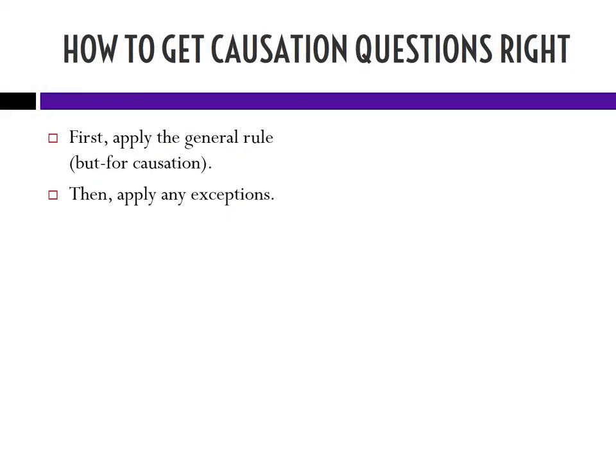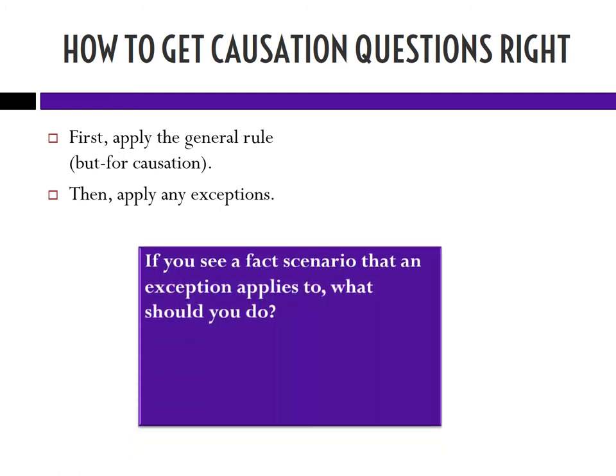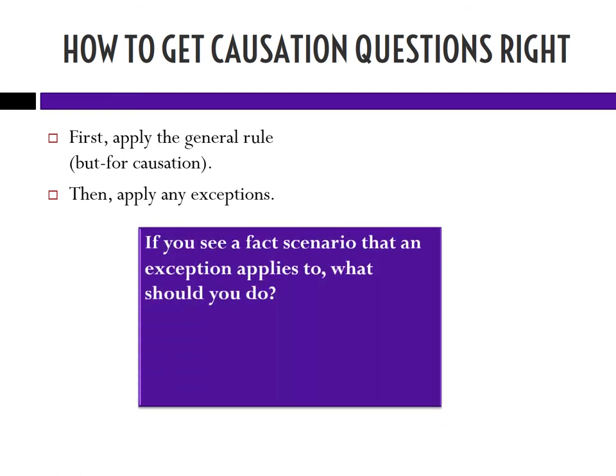There's a trick to always get but-for causation questions correct and that trick is to first apply the general rule, which is but-for causation, and then apply any exceptions. You want to do this with all causation questions. Always start with but-for causation.